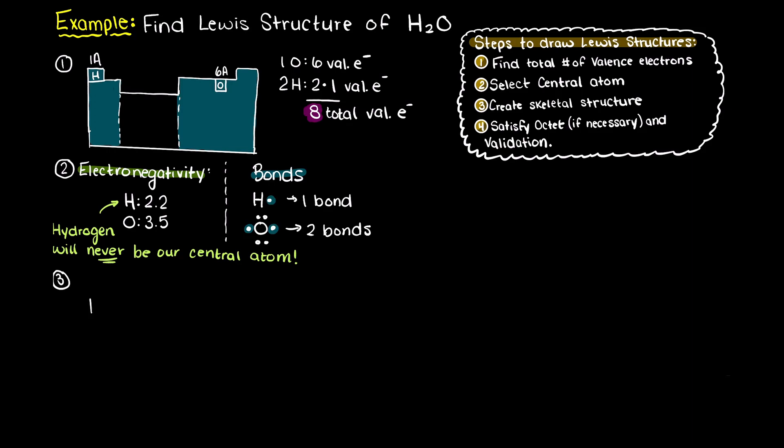Now that we know our central atom, we need to create a skeletal structure of our compound. Let's place our oxygen atom in the center, and our hydrogen atoms on either side of the oxygen, and let's add in our valence electrons for each atom. Now, let's place in our relevant covalent bonds to connect all our atoms. As we no longer have any unpaired electrons left, we can move on.